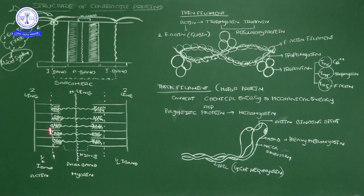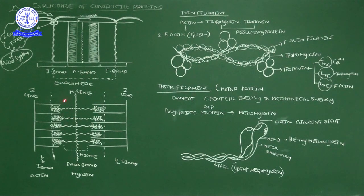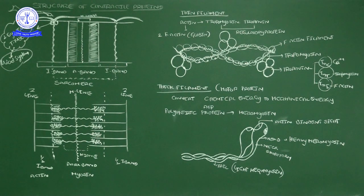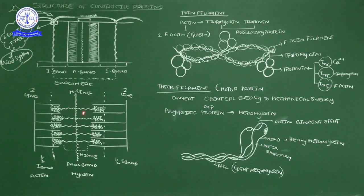The dark band is not fully dark throughout. The adjacent sides of the dark band are darker than the middle. The part of the dark band that does not exhibit more darkness is called the H-zone. In the edge places of myosin, where actin and myosin overlap, the appearance is darker. The middle of the myosin filament is lighter — that lighter region within the dark band is called the H-zone. The middle position of the H-zone has the M-line.